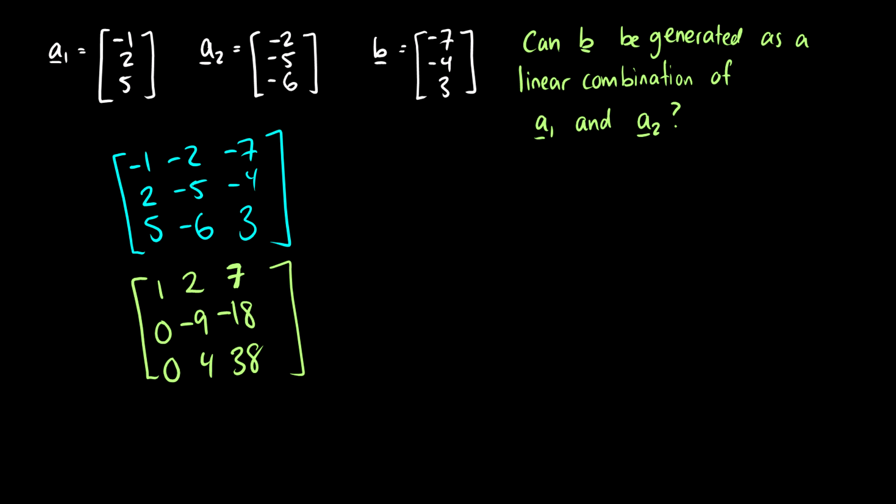I believe I did that right. So adding 5 of the first row. So this should be -16 and this should be -32. Okay, so I believe now we are good. So now let's do some quick multiplication. So we have [1,2,7]. Let's divide the second row by -9. So we're going to get [0,1,2]. Let's divide the third row by -16: [0,1,2].